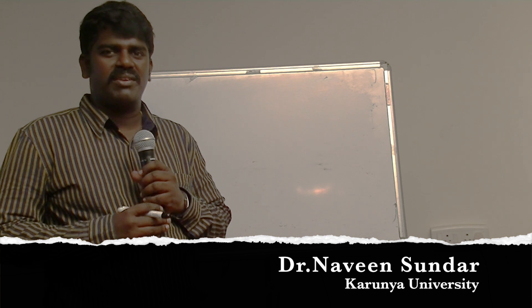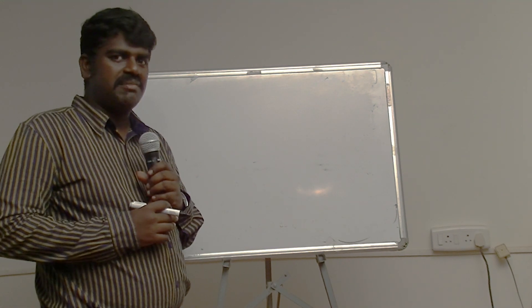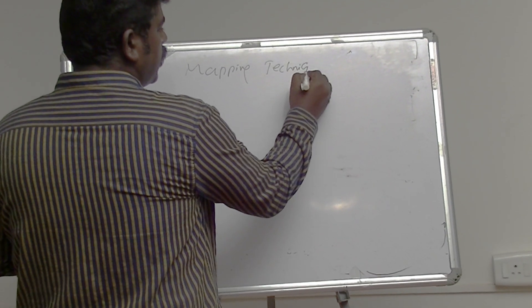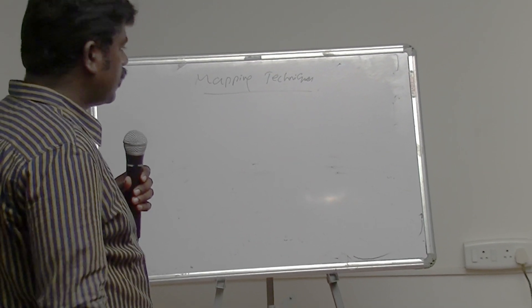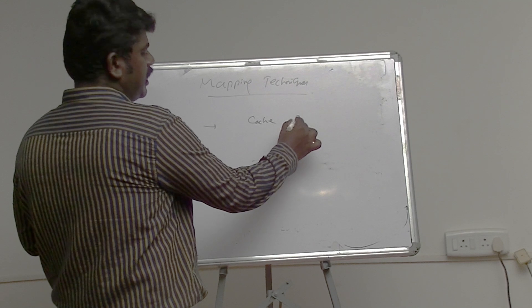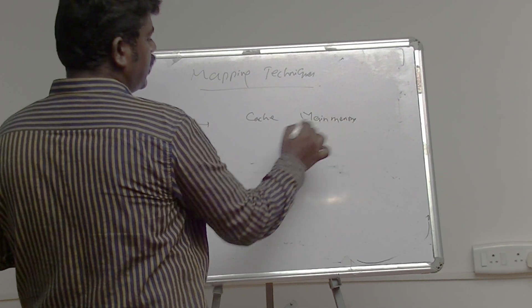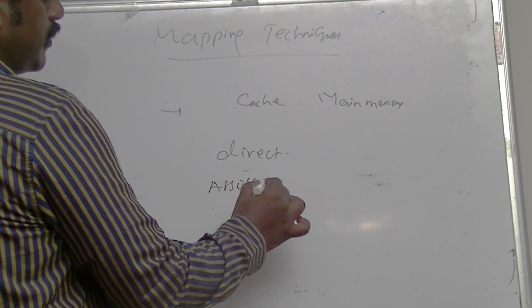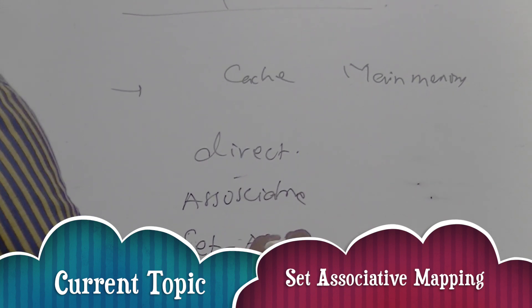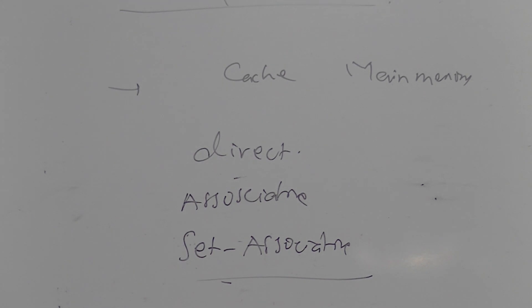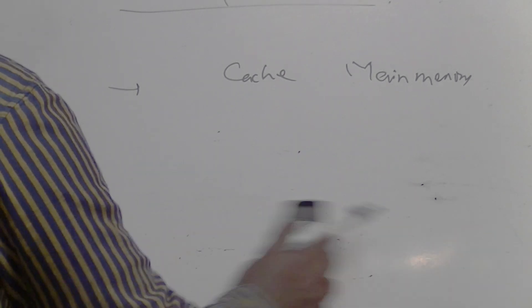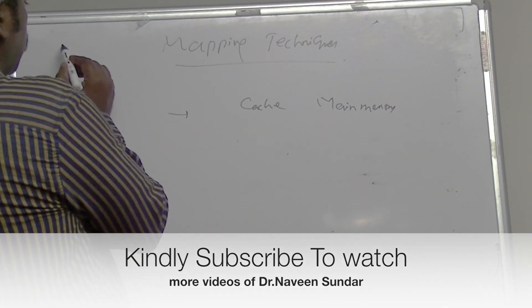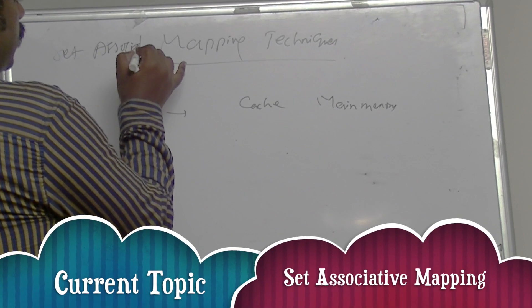Hello, this is Dr. Navin Sundar from Karnia University. We are covering a series of lectures on mapping techniques in computer architecture. This is a very important topic involving the cache and the main memory. We have already seen direct mapping and associative mapping. Today we will see set associative mapping. I have uploaded the other two types, so kindly subscribe and watch those videos as well.